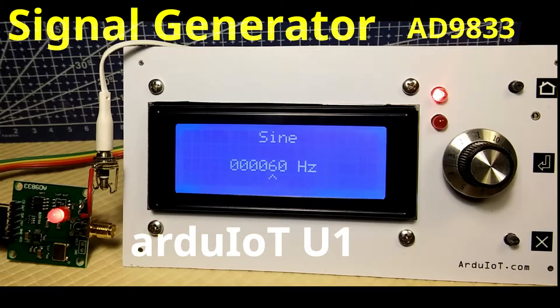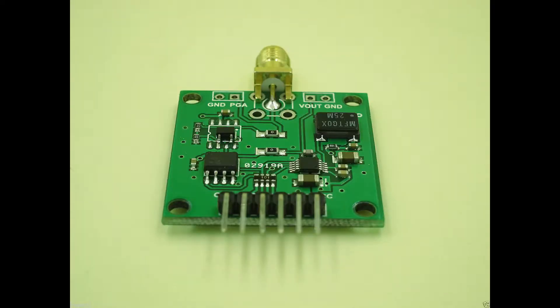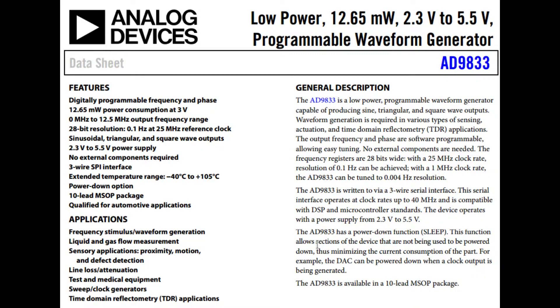In this example I'm using the U1 as a signal generator. I do that by using the module AD9833. In the specs we can see that the module goes from 0 to 12.5 MHz.